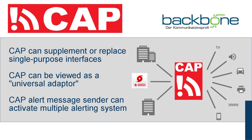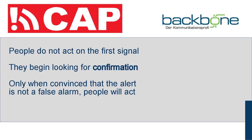CAP can be viewed as a kind of universal adapter for alert messages. A CAP alert message sender can activate multiple alerting systems with a single input, reducing the cost and complexity of notifying many alerting systems. People do not typically act on the first alert signal, but begin looking for confirmation. Only when convinced that the alert is not a false alarm will people act.